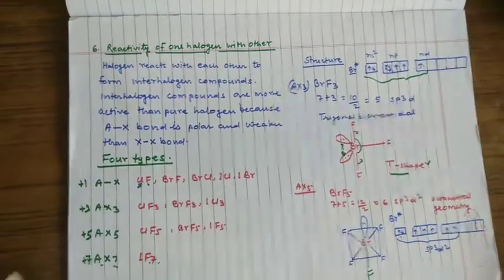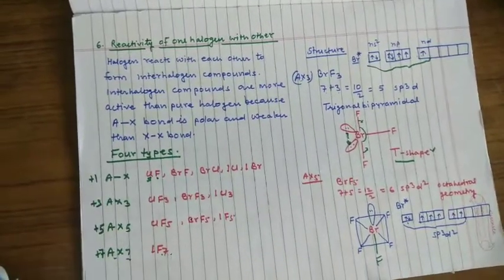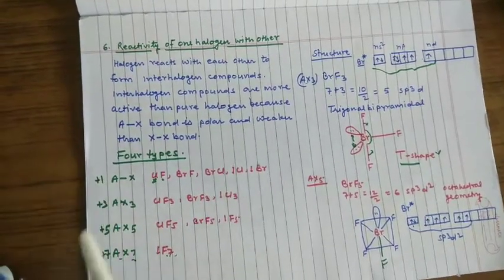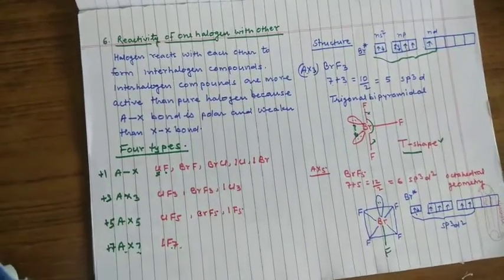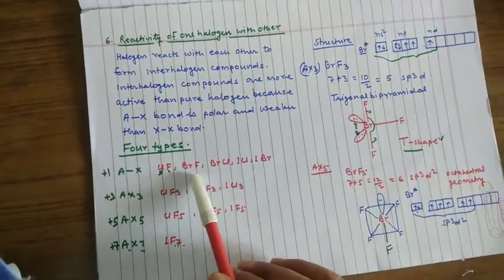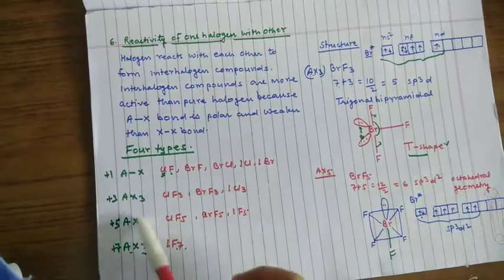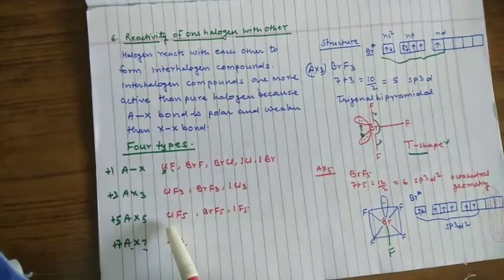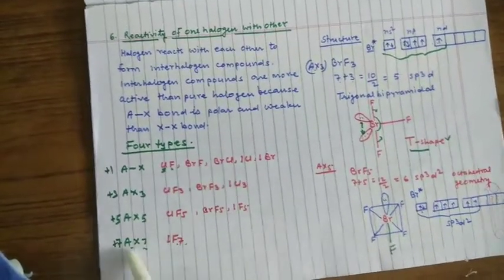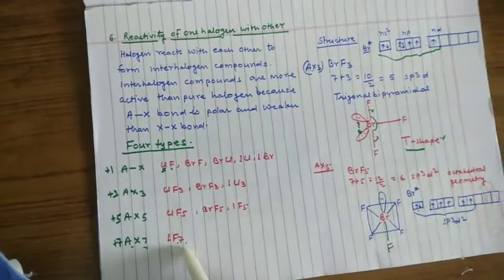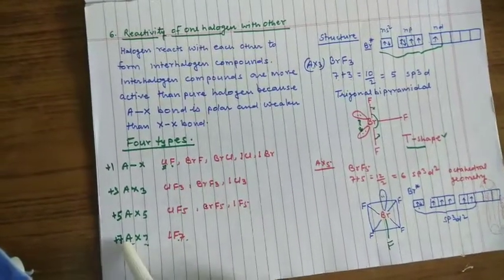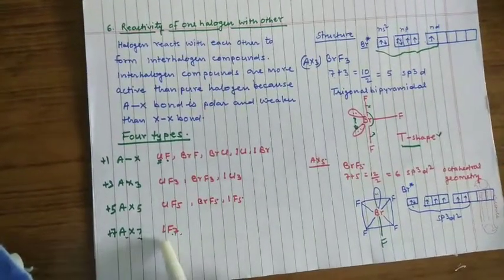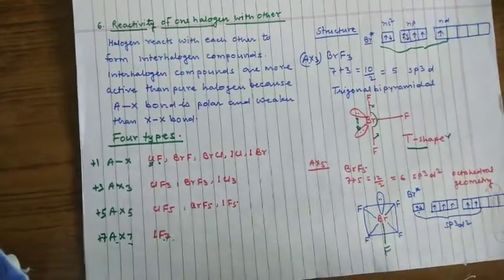There are four types of interhalogen compounds. They can be classified as AX type, AX3, AX5 and AX7 in oxidation state of plus 1, plus 3, plus 5 and plus 7. AX type is ClF, BrF, BrCl, ICl and IBr. Similarly, AX3 type is ClF3, BrF3, ICl3. AX5 is ClF5, BrF5, IF5. And AX7, only compound is IF7 in the oxidation state of plus 7 because fluorine is strongest oxidizing agent, so it can oxidize the iodine up to the oxidation state of plus 7.